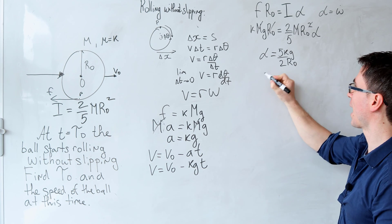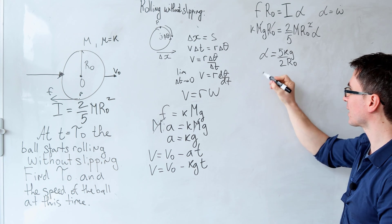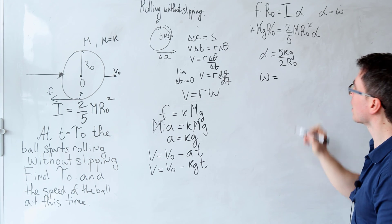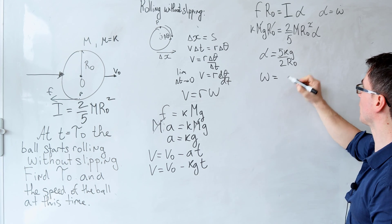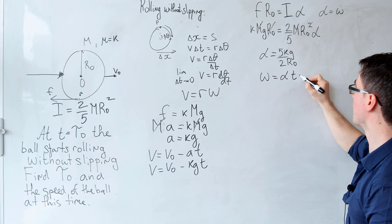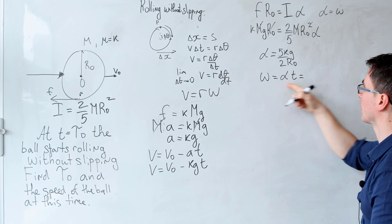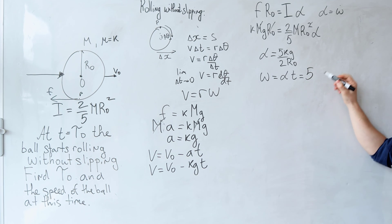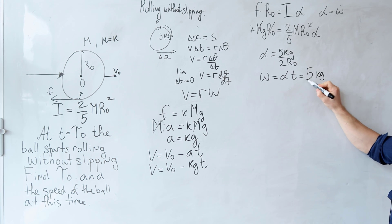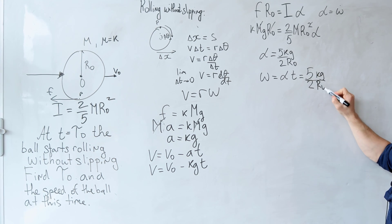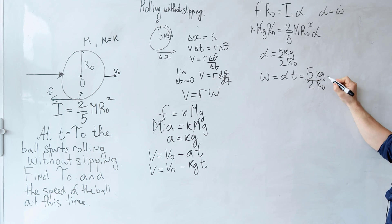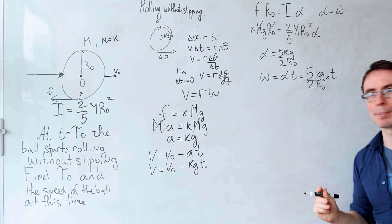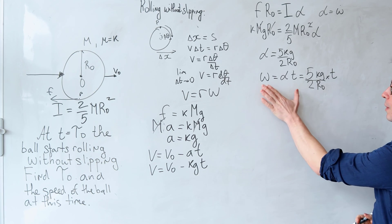Using the rotational equations of motion — exactly analogous to the translational case — the angular speed at time t is ω(t) = α·t = 5kg·t/(2r₀).